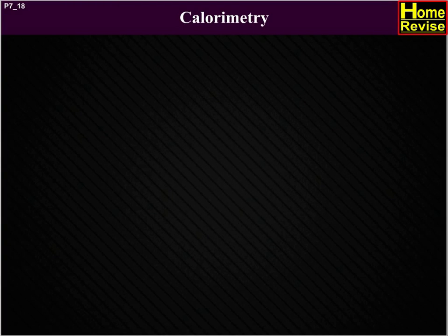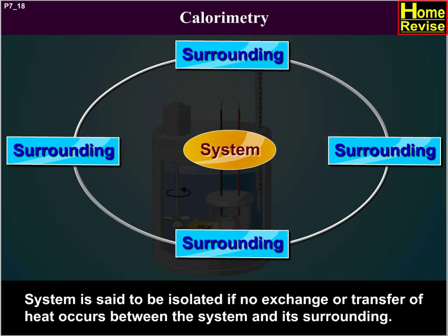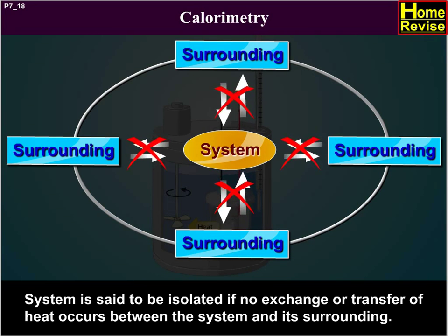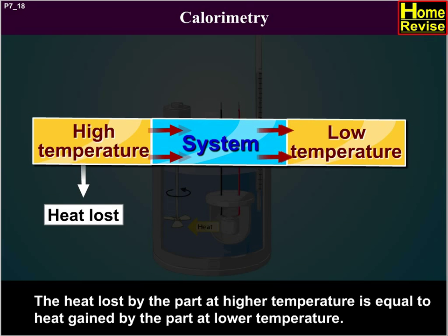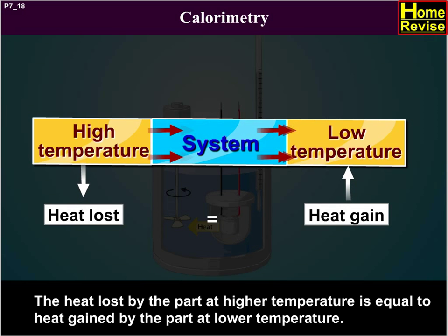A calorimetry system is said to be isolated if no exchange or transfer of heat occurs between the system and its surroundings. When different parts of an isolated system are at different temperatures, a quantity of heat is transferred from the part at higher temperature to the part at lower temperature. The heat lost by the part at higher temperature is equal to the heat gained by the part at lower temperature.